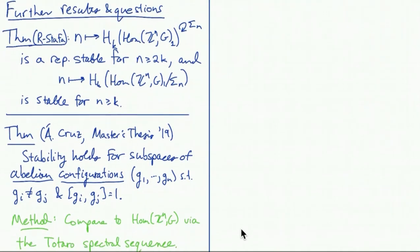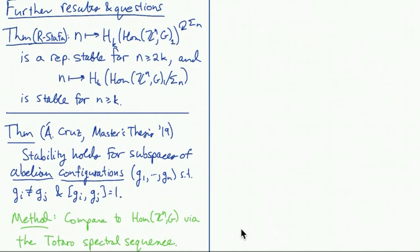So I just want to end by saying a little bit about some further results and a couple of questions. So there's another direction in which you can look at these spaces. You can change n, the number of commuting elements, instead of changing the Lie group. And when you do that, you have a symmetric group action just by permuting the elements in your n-tuple. And it turns out that those sequences are also representation stable. The homology is representation stable. And you can give a definite bound there. And you can also take the quotient by the symmetric group action, which in homology corresponds to taking invariants. And there you get stability for n greater than or equal to k. And the methods are kind of similar, again, using Baird's models.